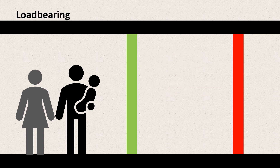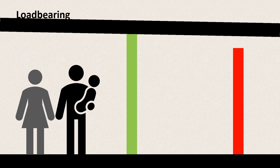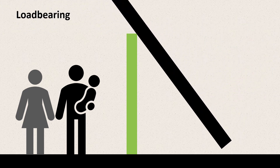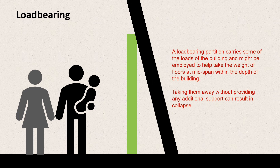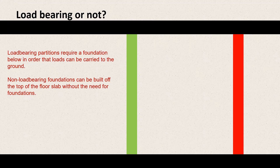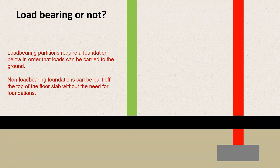A load-bearing partition on the other hand carries some of the loads of the building and might be employed to help take the weight of the floors at mid-span within the depth of the building. Taking a load-bearing partition away can result in collapse. Load-bearing partitions require a foundation below in order that the loads can be carried to the ground, whereas non-load-bearing partitions don't require that.